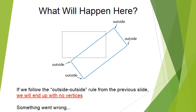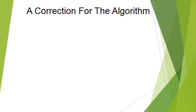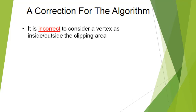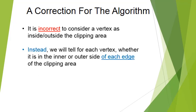Here is the correct algorithm. It was incorrect to consider a vertex as inside or outside the clipping area as a whole. Instead of looking at the whole clipping area, we will each time look at one of the edges of the clipping area. In our example, the clipping area has four edges: left, right, top, and bottom. We take each one and check for each vertex if it is on the inner side or the outer side of that edge.